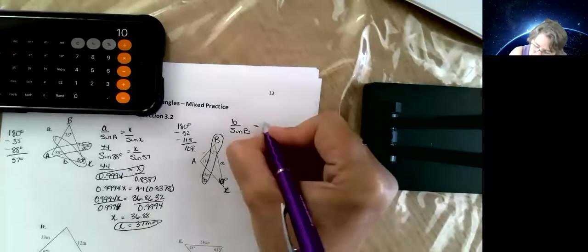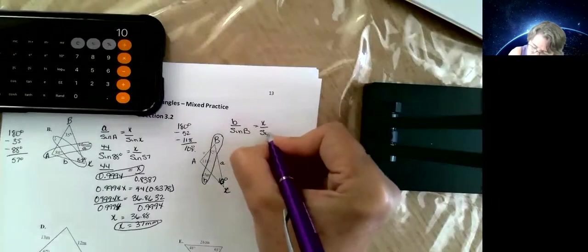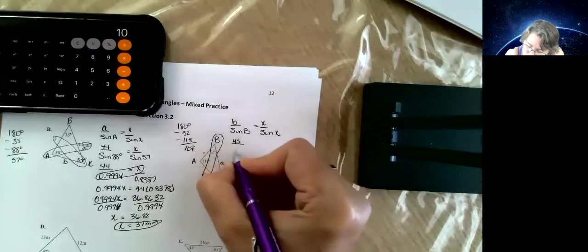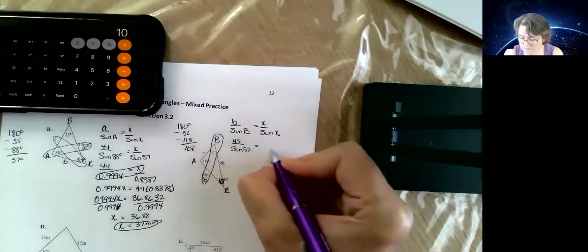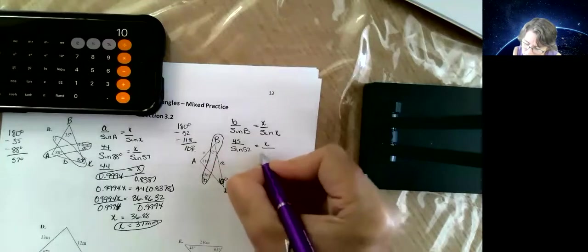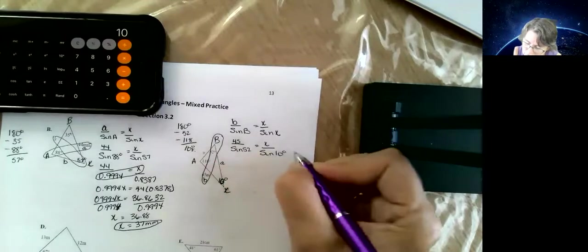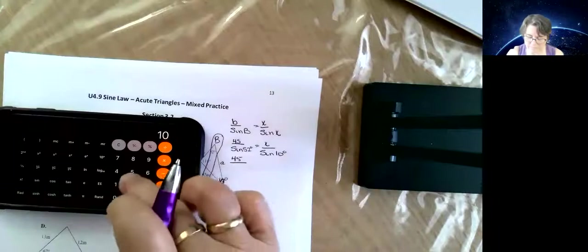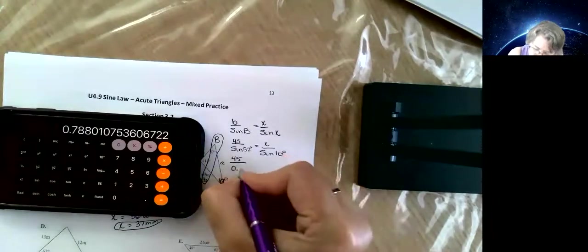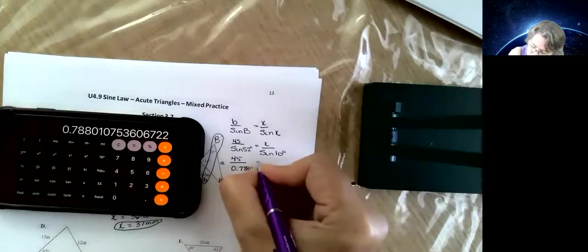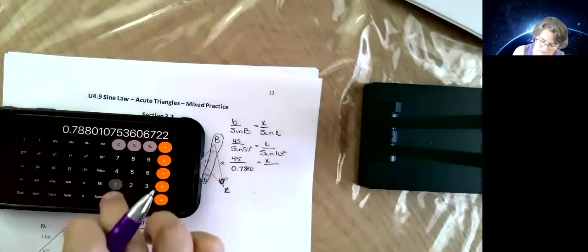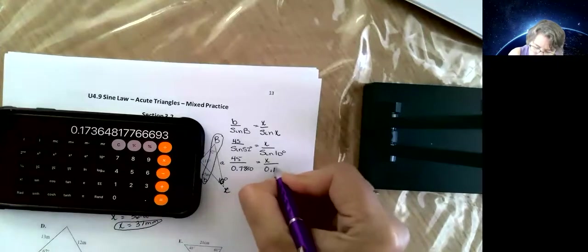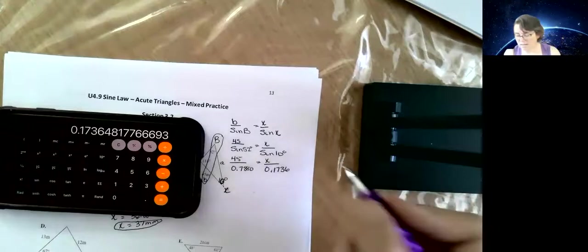So x over sine x. I could have written that before. So b, which is 45, over sine 52, is equal to x over sine of 10. Sine 71... 0.7807 is equal to x over sine 10. And sine of 10 is 0.1736. Cross multiply.